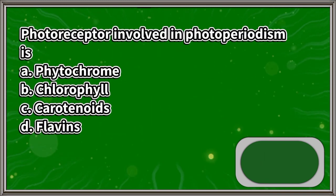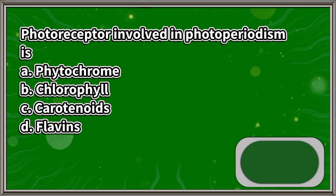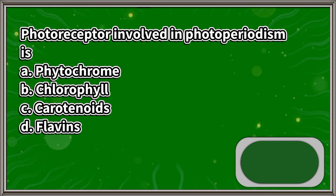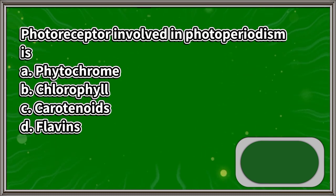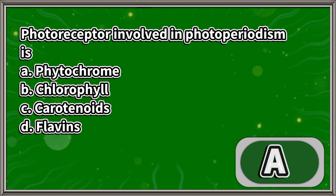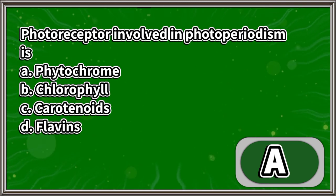The photoreceptor involved in photoperiodism is: A. Phytochrome, B. Chlorophyll, C. Carotenoids, D. Flavins. The answer is letter A.